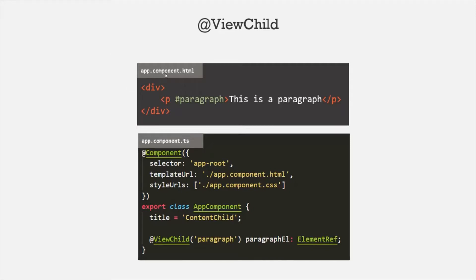For example, here we have this appComponent.html file, and inside this HTML file we have written some HTML. We have a div, inside that div we have a paragraph element, and on this paragraph element we have used a local reference variable. Then, in order to access this paragraph element from our appComponent class, we are using @ViewChild decorator, and to this @ViewChild decorator we have passed the local reference of this paragraph element. So this @ViewChild decorator will assign the paragraph element property with a reference to this paragraph element.